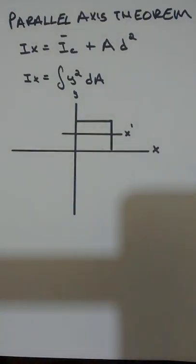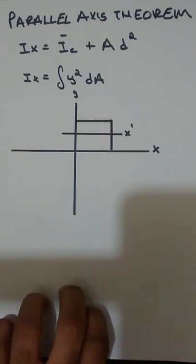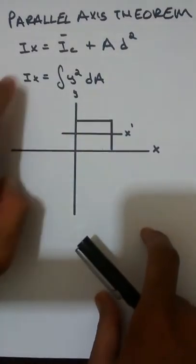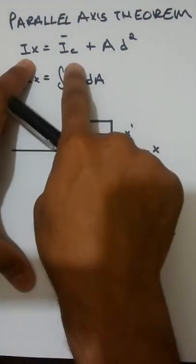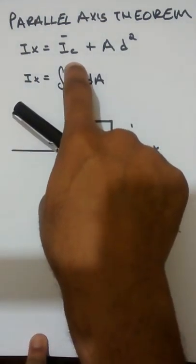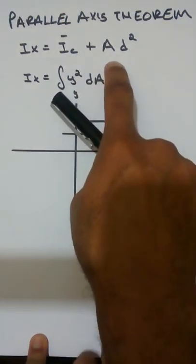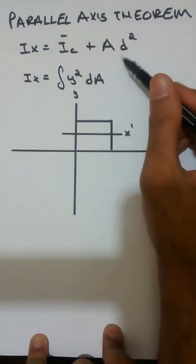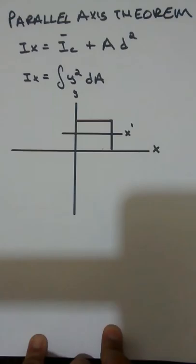In this video I'm going to show you how to use the parallel axis theorem to calculate the area moment of inertia of a rectangle. The area moment of inertia about the x-axis is equal to the area moment of inertia about its centroidal axis plus the area of the figure times the distance squared. This distance is the distance between the two parallel axes — hence the parallel axis theorem.